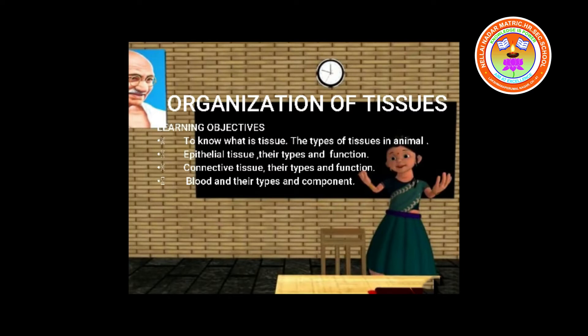The functions of epithelial tissue: the skin, which forms the outer covering of the body, protects the underlying cells from drying, injury, and microbial infection. They help in absorption of water and nutrients. They are involved in elimination of waste products. Some epithelial tissue perform secretory functions, that is secretion of sweat, saliva, mucus, and enzymes.